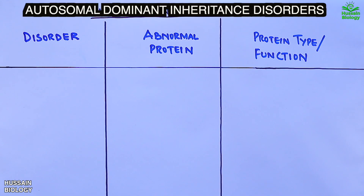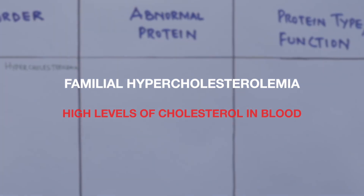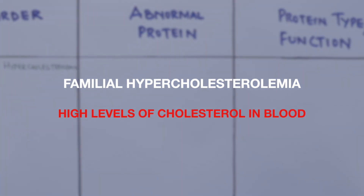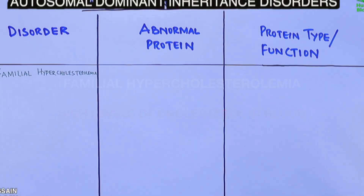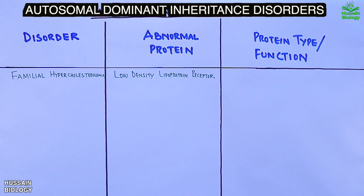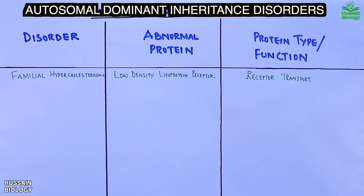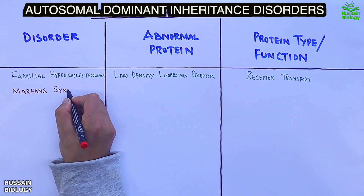Let's discuss autosomal dominant disorders. Number one is familial hypercholesterolemia, where we have high levels of cholesterol in the blood. It is due to an abnormal LDL receptor protein, whose normal function is receptor-mediated transport.